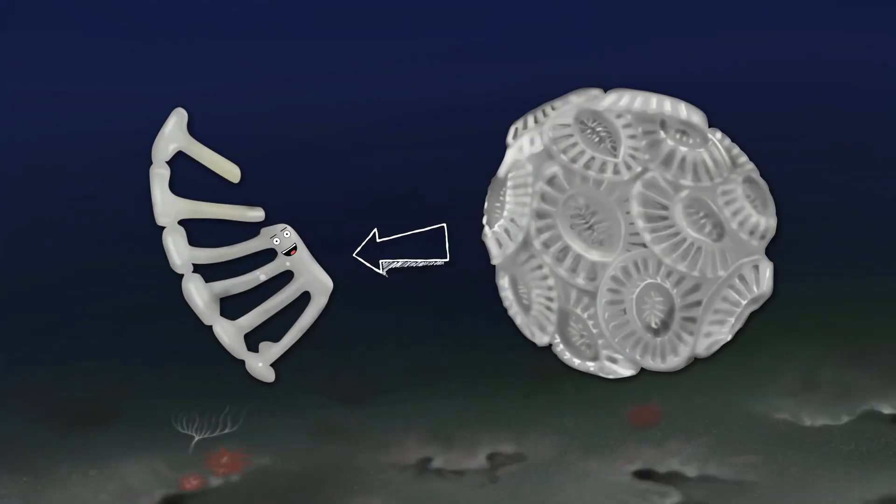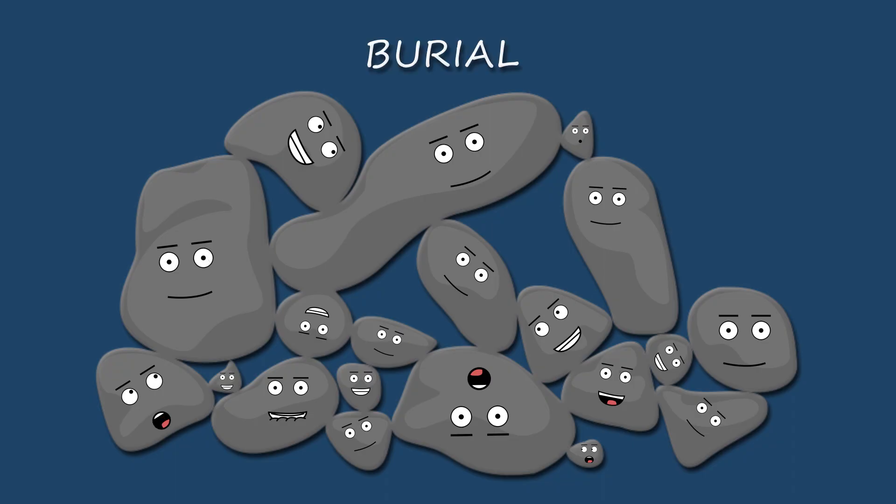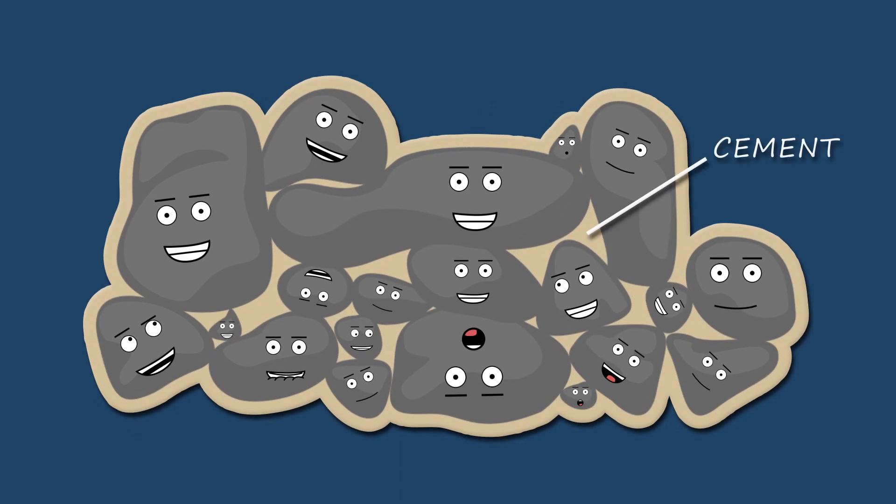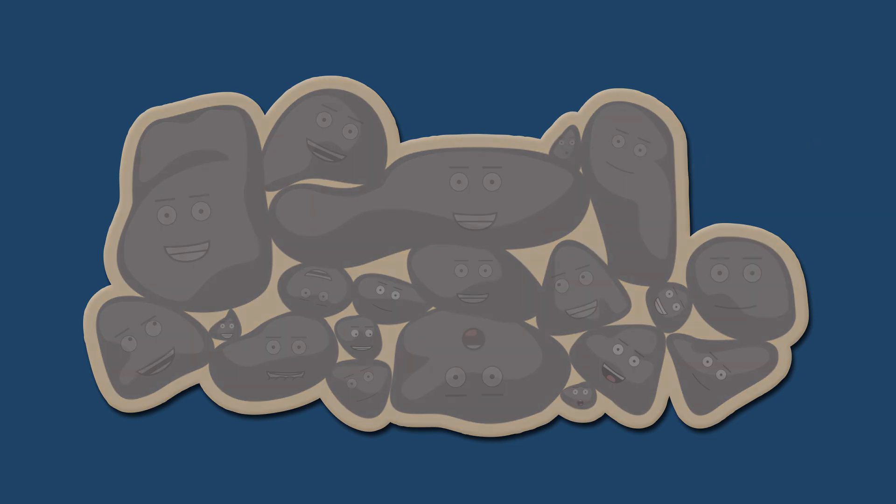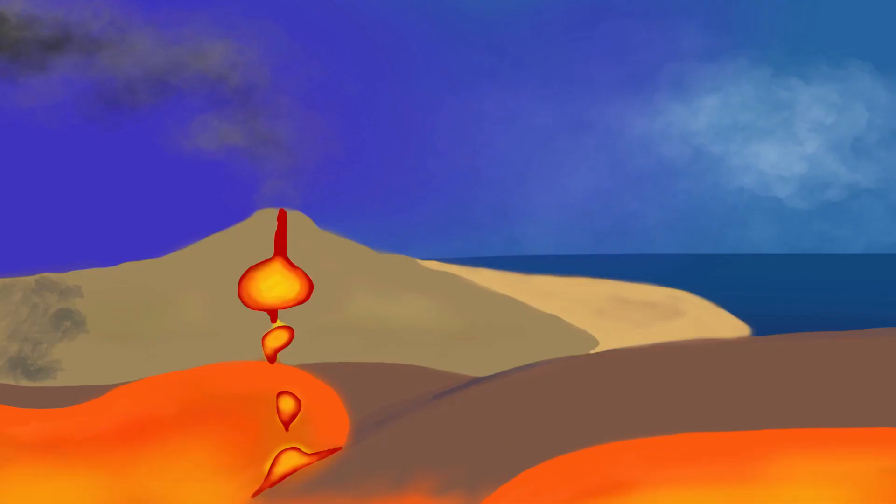As we get buried, we ocean floor sediments get compacted and cemented together. Cement fills in the spaces around the sediments with precipitated minerals, binding them together to form rock. After being buried, compacted, and cemented, I become part of a sedimentary rock called limestone.